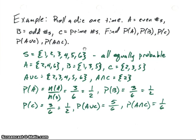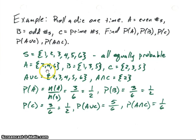We always want to start out by finding the sample space. In this case, we're rolling a die and there are six outcomes, one through six. And if it's a fair die, those six outcomes are equally probable. So we have a finite sample space with equally probable elements. The event A, the even numbers, is {2, 4, 6}.